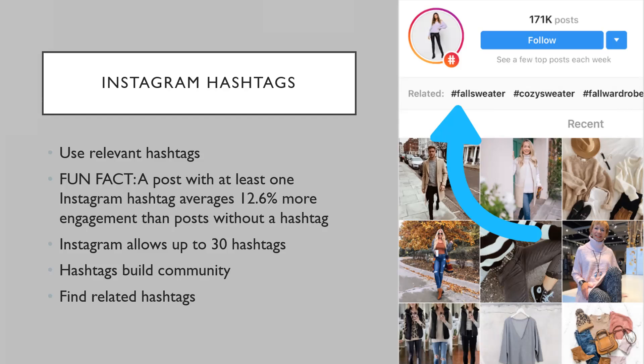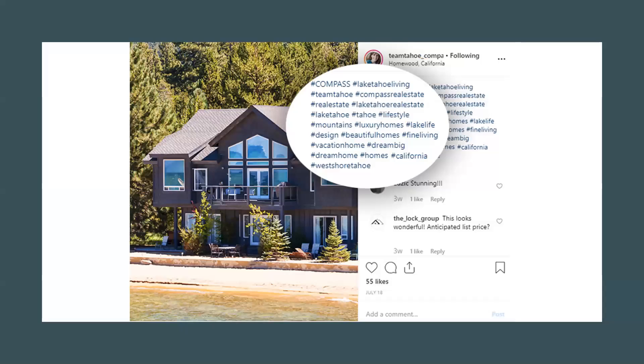To find related hashtags, type your hashtag into the search bar and select 'Tags' from the dropdown menu. You'll be able to see all the top hashtags closely related to your own, which will reveal additional ways to reach and engage with your community. You can browse through posts containing a hashtag you're having success with, and it'll give you ideas for future hashtags.